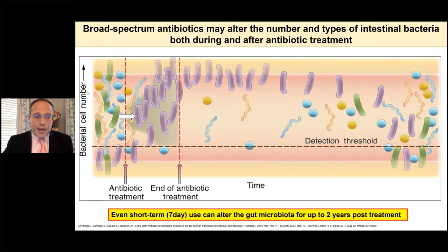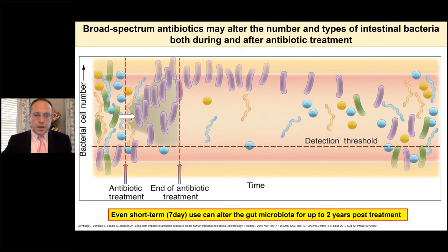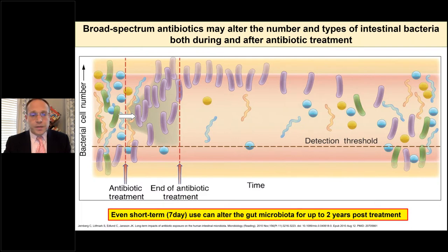Looking at this figure, the Y-axis shows bacterial cell number and the X-axis shows time. At baseline, there is nice diversity in number and types of bacteria. During antibiotic treatment — the period between the vertical red dashed lines — we see a decrease in the number and types of intestinal bacteria. After treatment, it takes a significant amount of time for the intestines to recover the bacterial diversity and numbers that existed prior to antibiotics. This is important for understanding antibiotic stewardship.